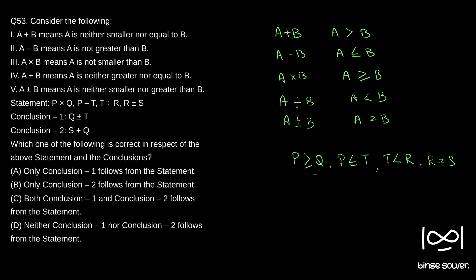Now we will see whether the conclusions follow. First, the relationship between Q and T. P is greater than or equal to Q, and P is less than or equal to T. From these two relations, we can say Q is less than or equal to T. The conclusion was Q plus or minus T, meaning Q equal to T — but that is not true, since Q can be less than T also. So conclusion 1 is false and does not follow.